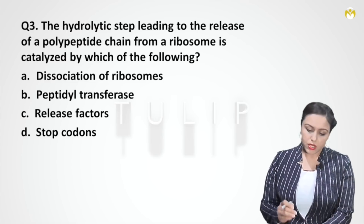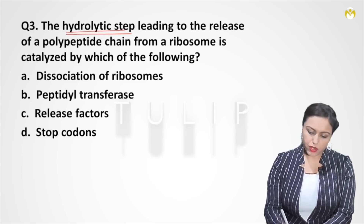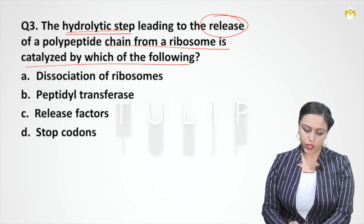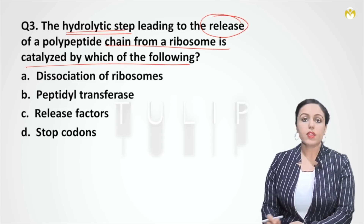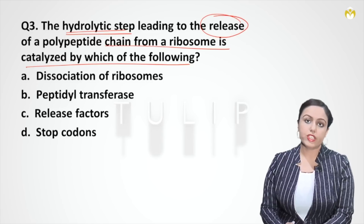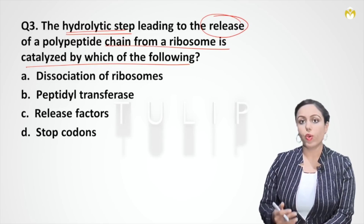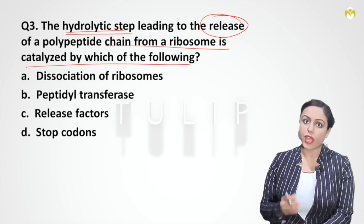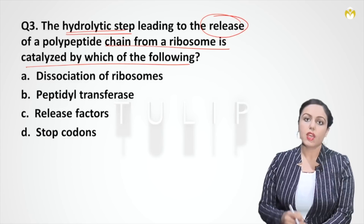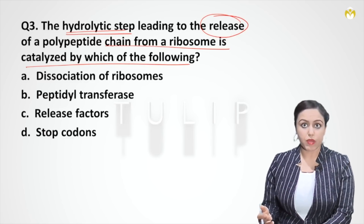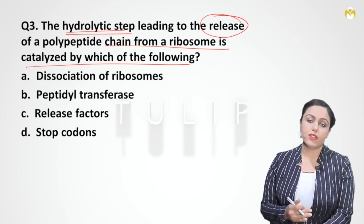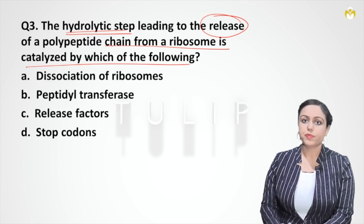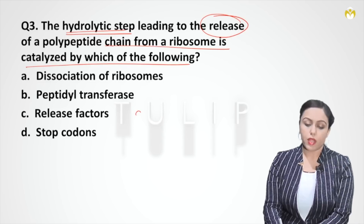Question three: the hydrolytic step for the release of polypeptide from a ribosome is catalyzed by which of the following? In translation we have initiation, elongation, and termination. During elongation, there is a ribozyme called peptidyl transferase that helps in making the peptide bond — it cuts the amino acid from the P site and attaches it to the A site of the ribosome.